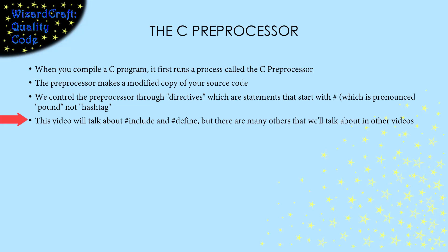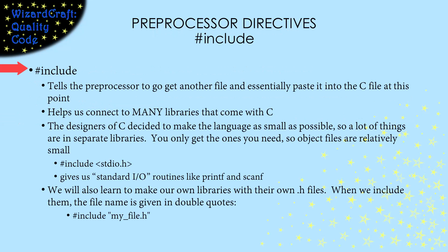There are lots of preprocessor instructions, but this video will only talk about pound include and pound define. The pound include directive tells the preprocessor to read another file and insert it at that point in our source file. This helps us share things between source files and gets access to many libraries that come with C. The designers of C had a goal of making the language as small as possible. So some things that are normally part of other languages are in separate libraries in C. To get the ones you need, you just include their .h files.